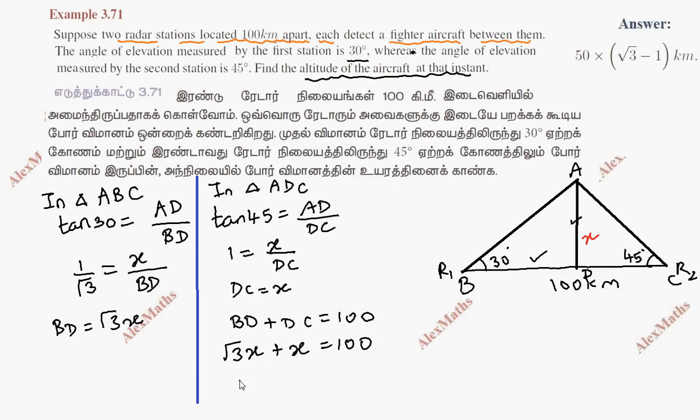So x times (root 3 plus 1) equals 100. Therefore x equals 100 divided by (root 3 plus 1).